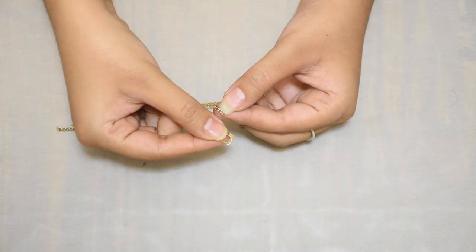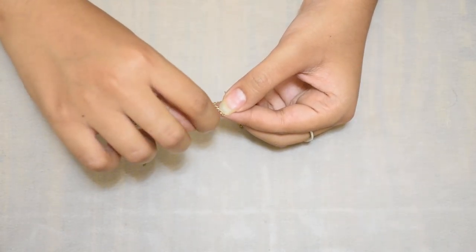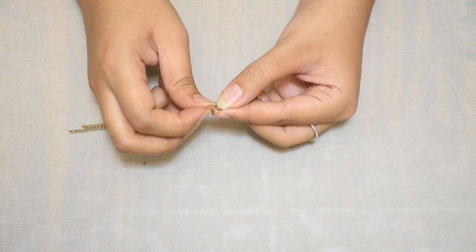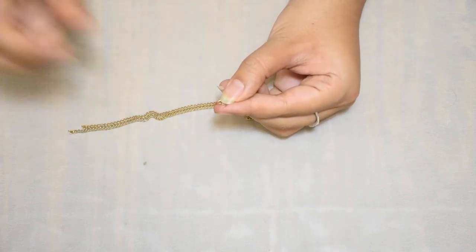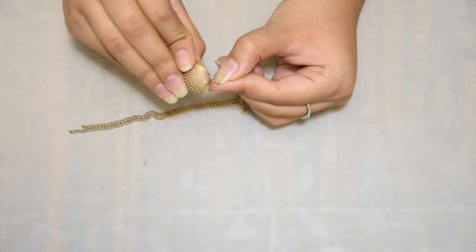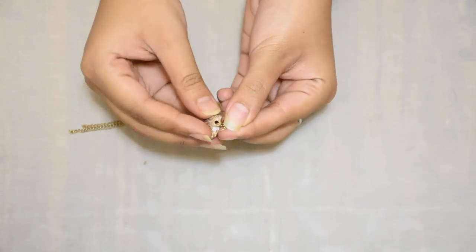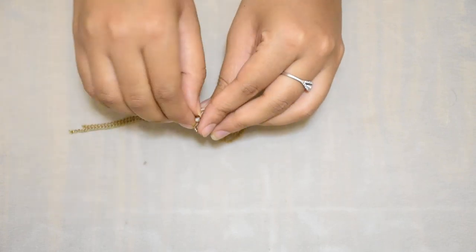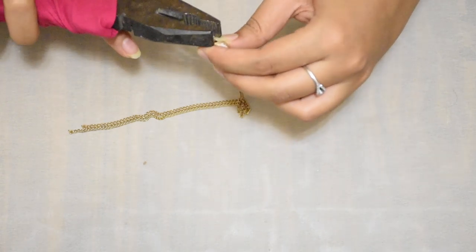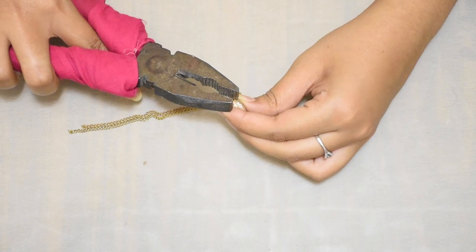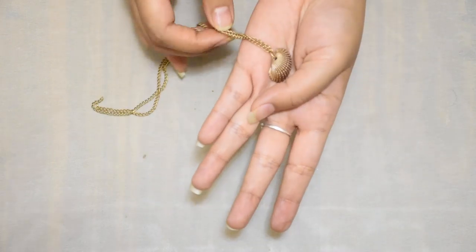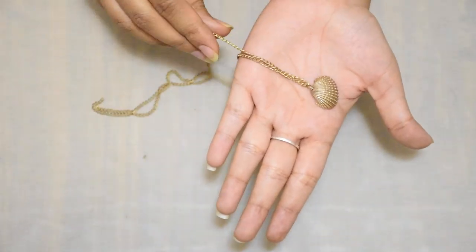Now we will take the jump ring and put it right in the middle of the chain and then we will take the cockle shell and we will put the cockle shell inside the jump ring. And then we will secure the jump ring with the plier. You can use the plier so that it is just secured in the end because with the bare hands it won't be possible to do so. This is how it should look like.